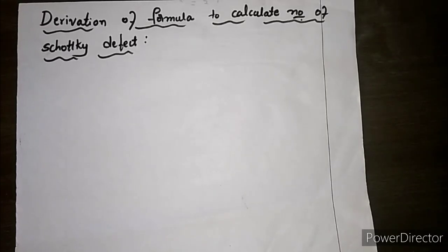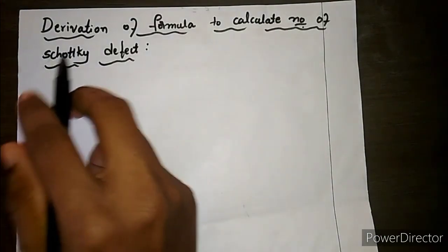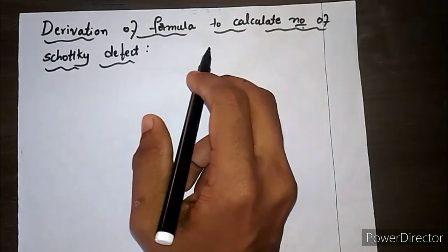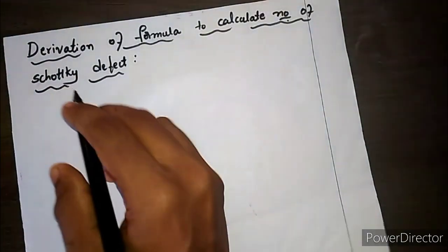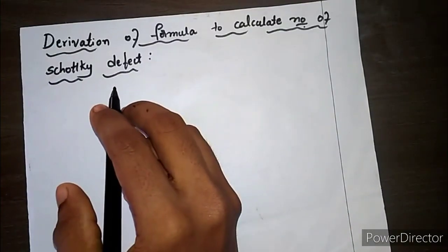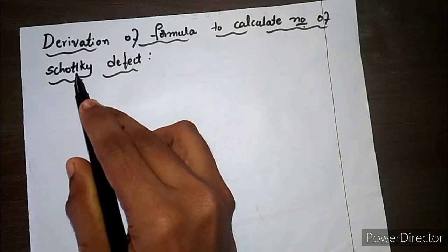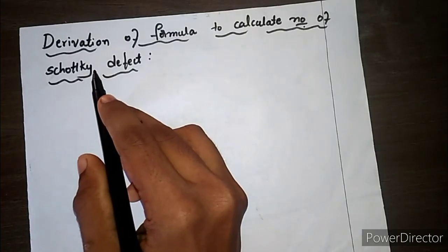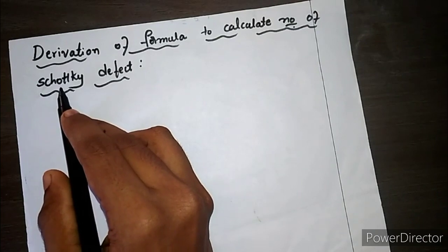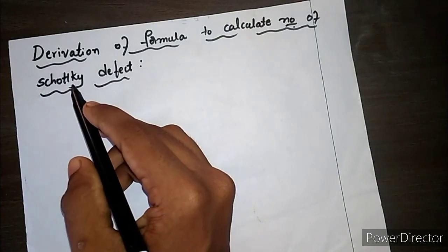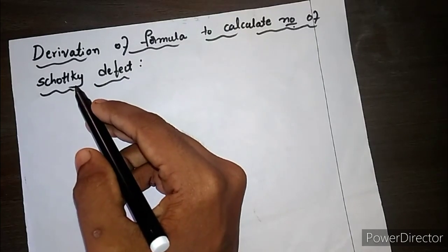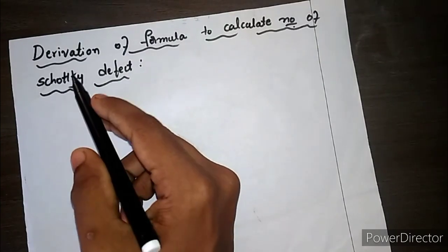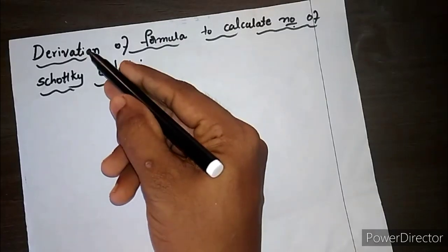Hello students, welcome to my YouTube channel. In this video we will study how to derive the formula to calculate the number of Schottky defects. In Schottky defects, the number of cation vacancies created will be equal to the number of anion vacancies. If you haven't watched my previous video explaining what a Schottky defect is, I encourage you to watch that first.